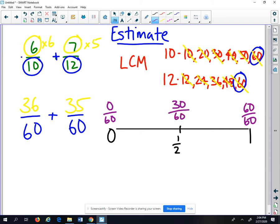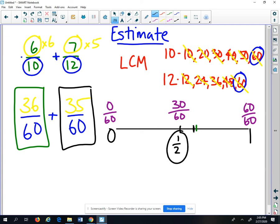And so the final thing I'm going to do now is I'm going to come over here and I'm going to say, well, where would 36 60ths go? It would be right after 30 60ths, right about here. And then where would 35 60ths go? It would be right before that. Both of these are closer to 1 half than they are to 1 whole. So both of them I'm going to estimate to be worth 1 half.